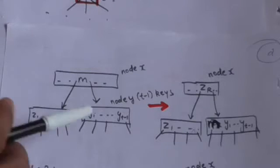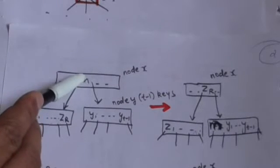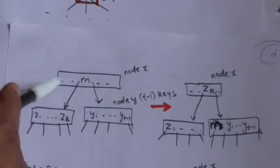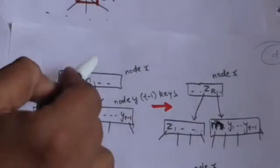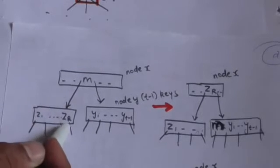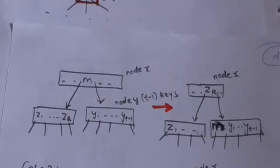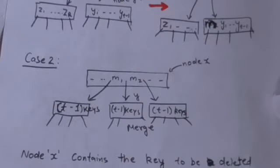Similarly, if the immediate left sibling of node Y has at least T keys, we can solve the issue by moving a key from node X down to node Y, moving a key from the immediate left sibling of node Y up to node X, and moving an appropriate child from the immediate left sibling of node Y to node Y.